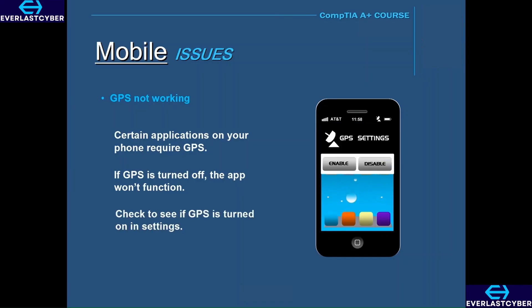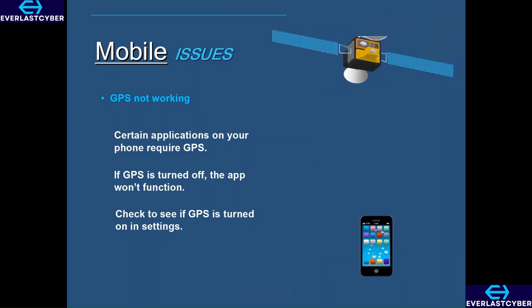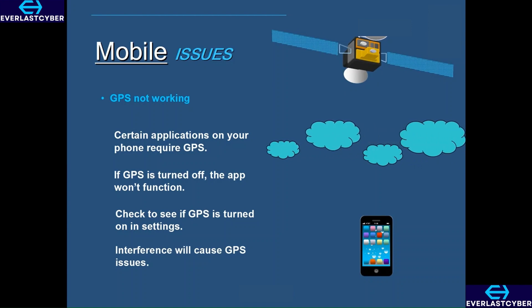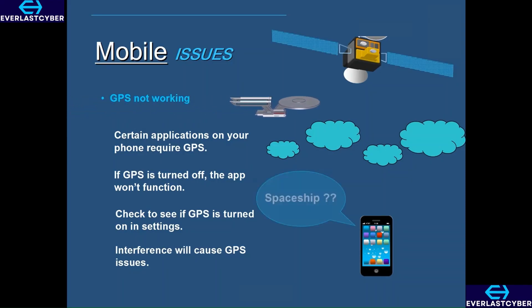If you find that your GPS is turned on and you're still having issues, remember that your GPS uses satellites for communication. For instance, if there is a cloudy day, that could interfere with satellite communication. Or maybe there's a spaceship passing by, and that could also interfere with GPS satellite communication.